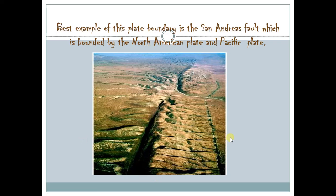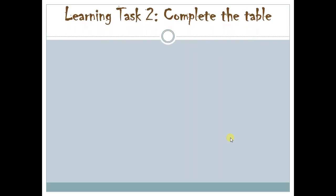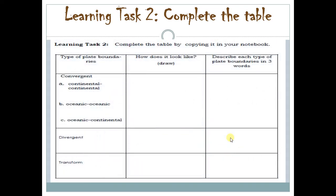Unlike all other plate boundaries that are not visible to the naked eye, this one is a very evident feature of the transform plate boundary. The San Andreas Fault — the North American plate and the Pacific plate — is actually on the surface of the earth. This is a clear evidence of the movement of the plate boundaries. You can actually step one foot on one side of the plate and step one foot on the other side. For your task this week, you are to complete the table by drawing the different features of the convergent boundary, divergent boundary, and transform boundary.